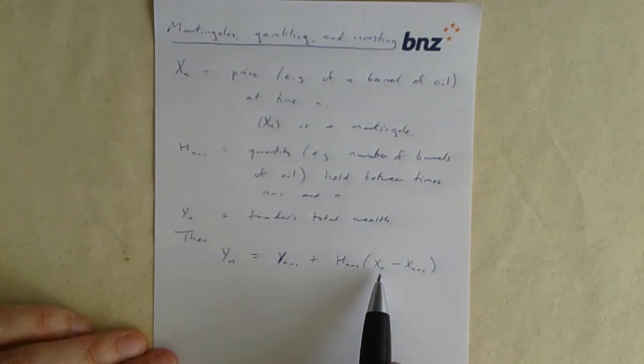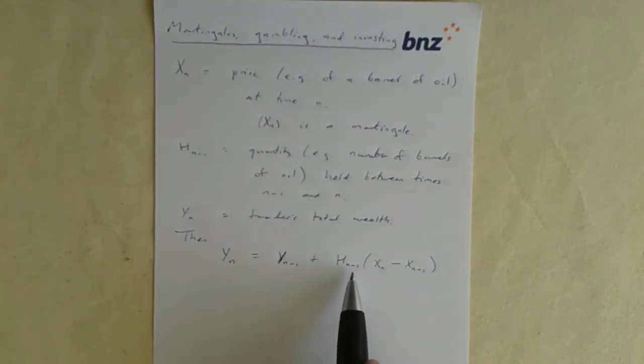Then what's the relationship between these things? y n is going to be y n minus 1, how much money he had before, plus however much he's managed to make or lose between times n minus 1 and n. And how much is that? It's how many barrels of oil he had, multiplied by the change in the value per barrel.